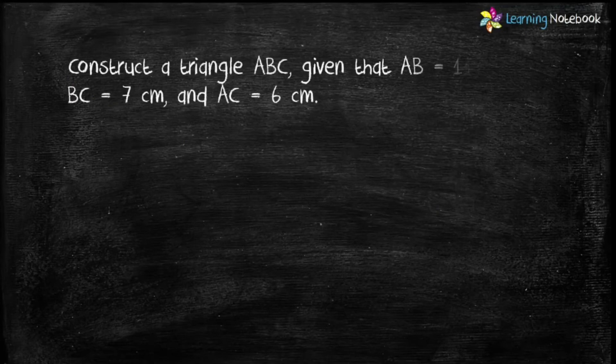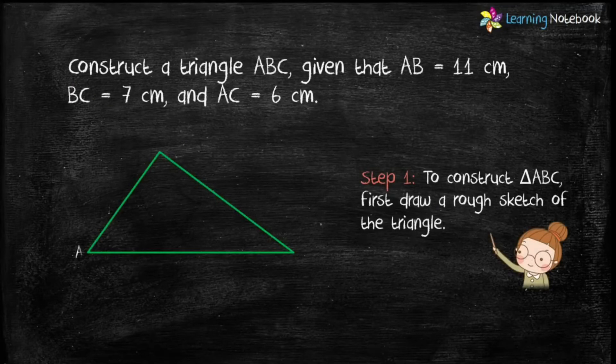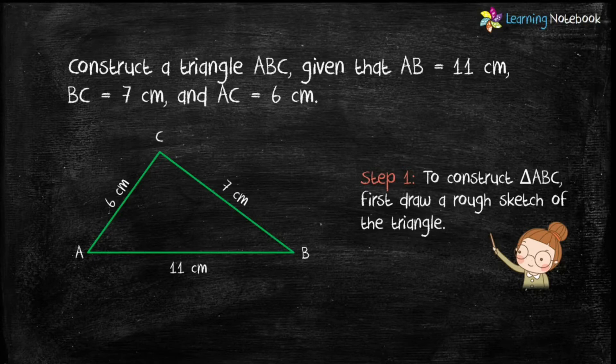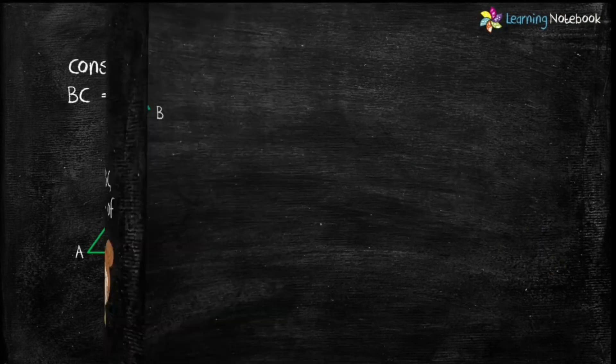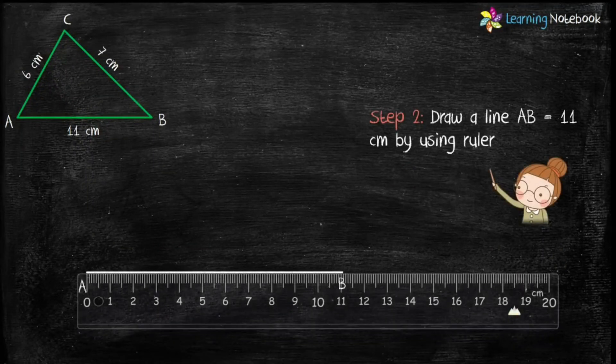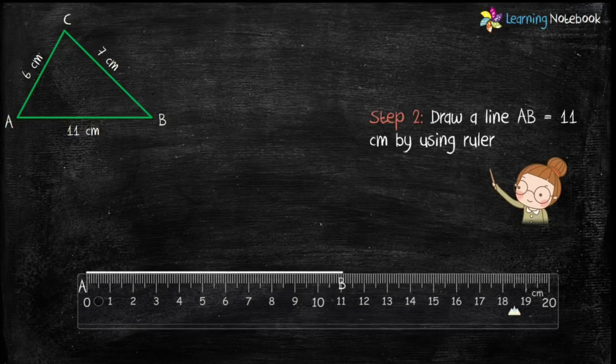So, let's start the construction. In step 1, draw a rough sketch of the triangle ABC so that you have an idea of how to construct this triangle. Step 2 is, draw a line AB equals to 11 cm with the help of a ruler.